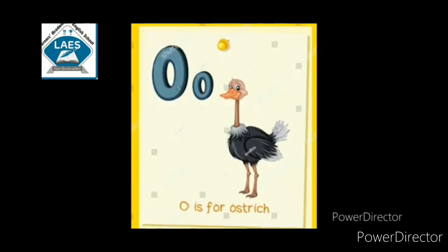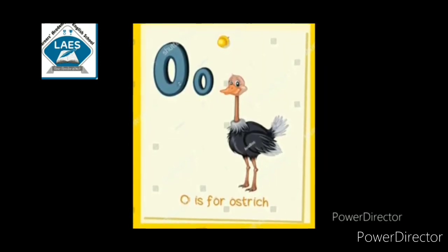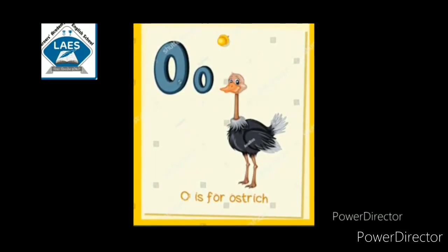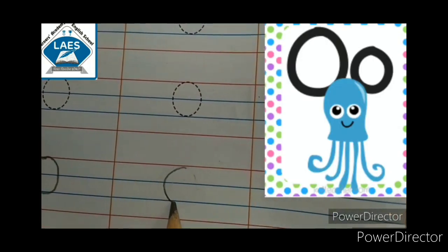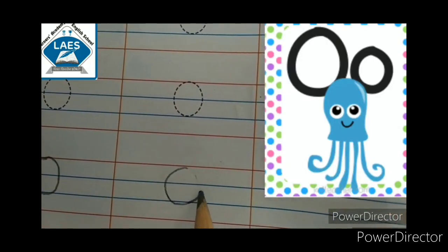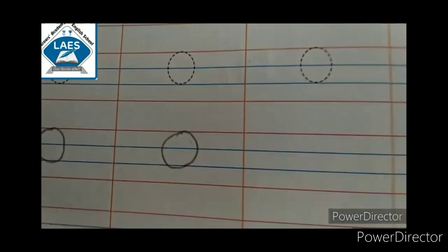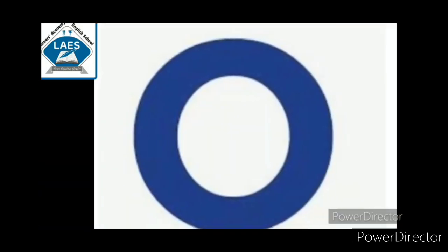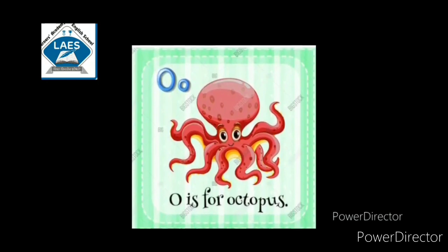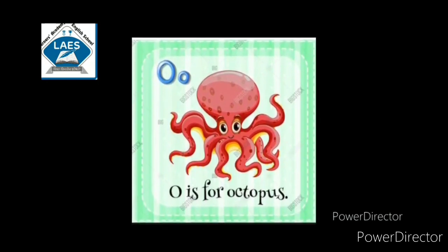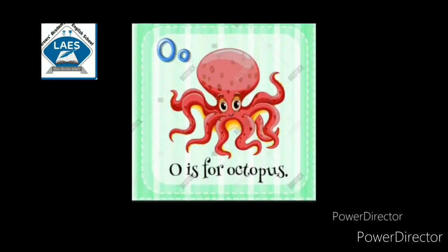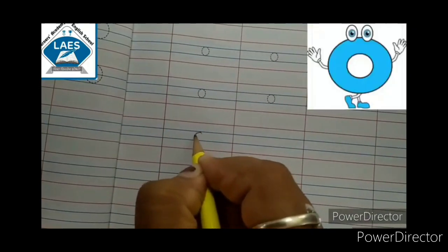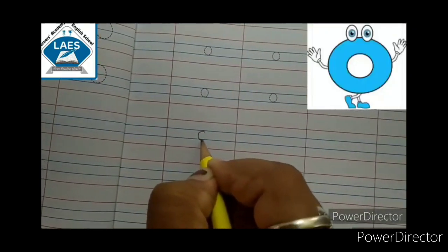O for ostrich. Let's write capital letter O. Small letter O. O for octopus. Let's write small letter O.